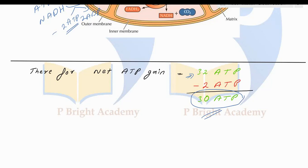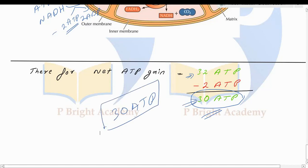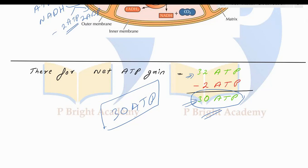So the net ATP gain after one molecule of glucose enters glycolysis and the TCA cycle is 30 ATP molecules. This is how the calculation works. Thanks for watching, have a great day.